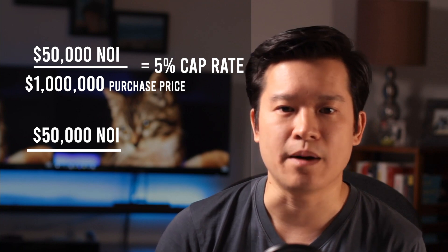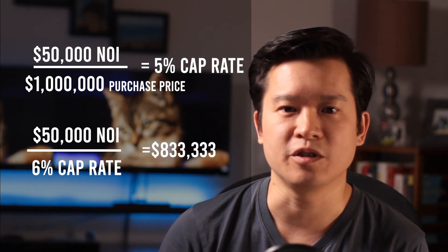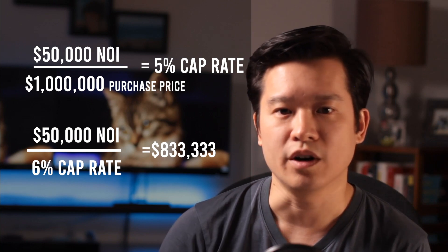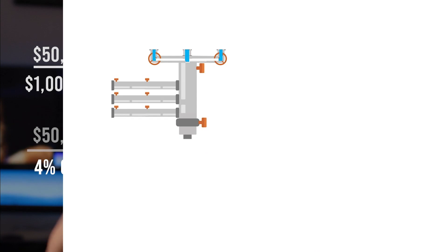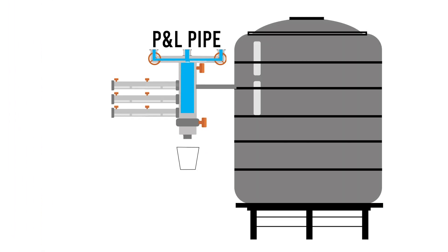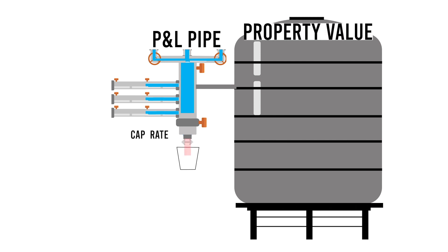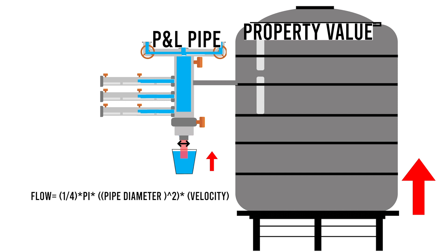If the building is selling at a 6 cap, then your building would be worth $833,333.33. Or at a 4 cap, $1.25 million. Going back to the pipe analogy, let's imagine that your P&L pipe is attached to a massive water tank to represent your property value. The cap rate links the diameter of the pipe to the size of the water tank — the bigger the water tank, the thicker the pipe, the higher your water flow. For you physics nerds, the flow of the water is proportional to the pipe diameter.